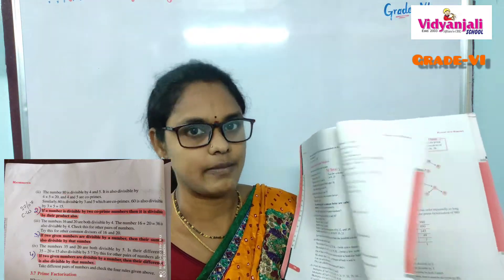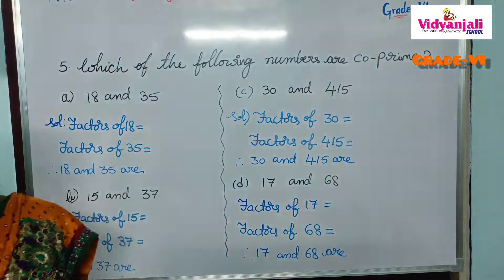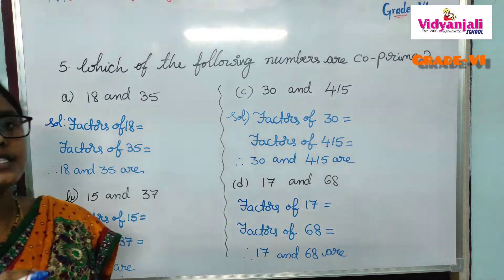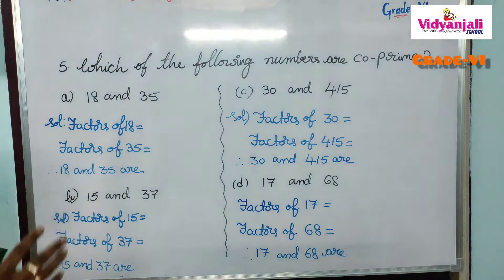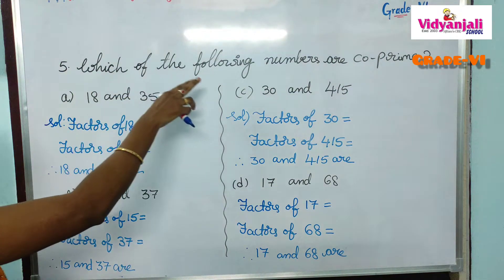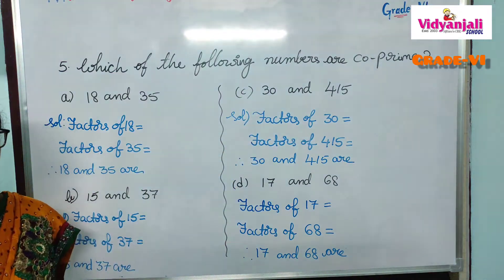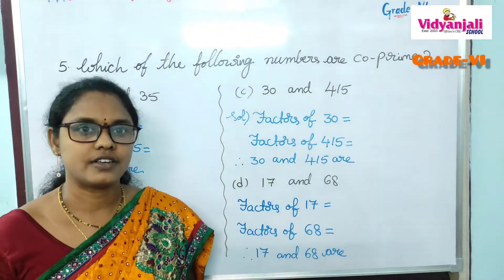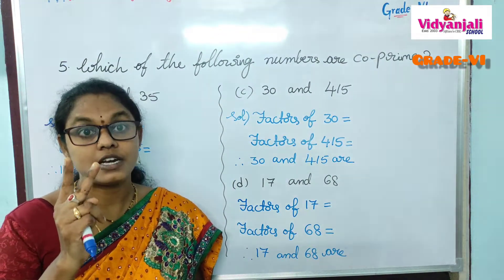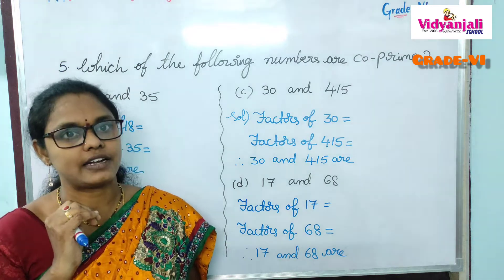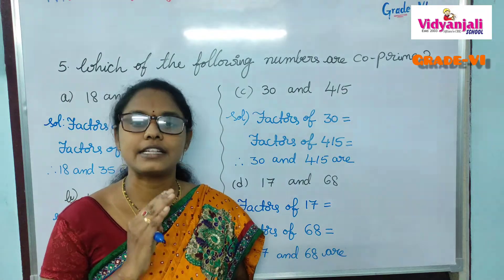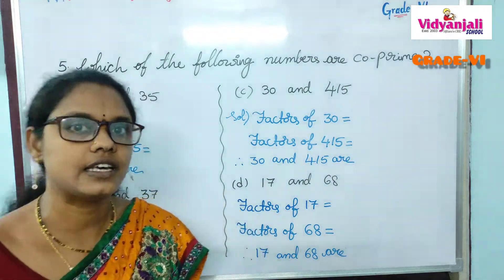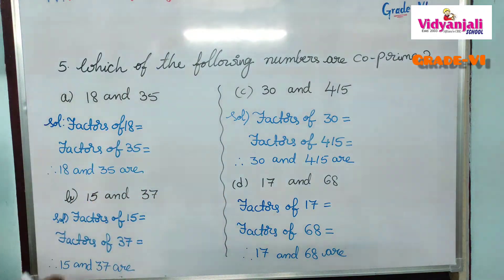In last class, we discussed the first four problems from exercise 3.4. Now let's do the remaining problems. The fifth question asks: which of the following numbers are co-prime? Recall: if any two numbers have no common factor except 1, they are co-primes. Let us write the factors and identify whether each pair is co-prime.